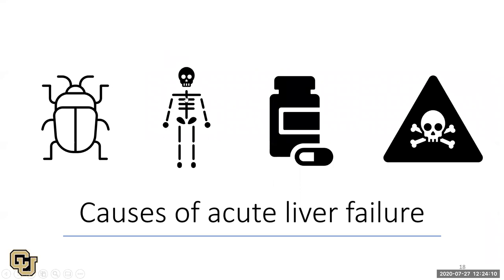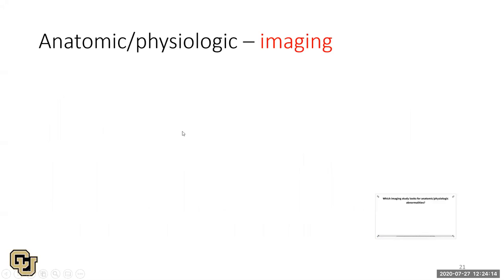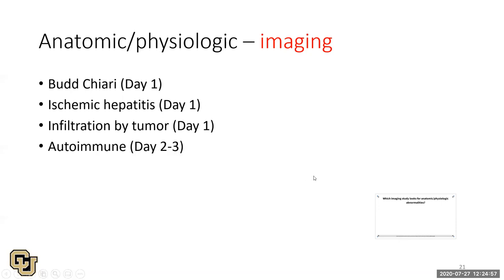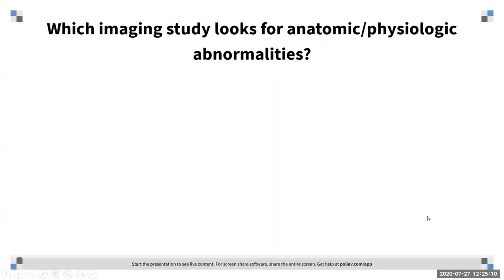Next, anatomy and physiology causes: typically identified through imaging. On day one, look for Budd-Chiari syndrome and ischemic hepatitis — some of that comes from history (known hypotension or hypovolemia) and AST/ALT trends. Also consider tumor infiltration on day one. Autoimmune causes are more day two or three. For imaging, order a right upper quadrant ultrasound with Doppler to assess blood flow, and a triple-phase CT scan to look for liver anomalies and blood supply.